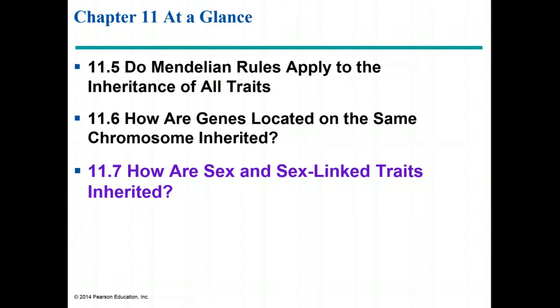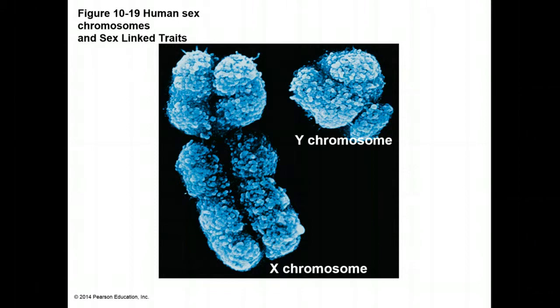Now let's talk about how sex-linked and sex-influenced traits are inherited, and what makes people male or female. Animals have a set of sex chromosomes that dictate gender. In mammals, females have two X chromosomes, while males have an X chromosome and a Y chromosome. The Y chromosome is much smaller than the X chromosome. A small section of the X and Y chromosome is homologous, allowing them to pair in prophase one and segregate during meiosis. These two chromosomes are called the sex chromosomes, and the rest of the chromosomes are called autosomes.